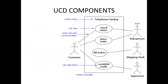The components of a UCD are: the boundaries of the system, which is the big box; the name of the system — please put it somewhere, either at the top or inside the box; the use cases, which are verbs like 'place an order,' 'fill an order,' 'log in' — these are all functional requirements. And the stickmen are the actors who interact with the system, and that could be a person or another system like a bank.